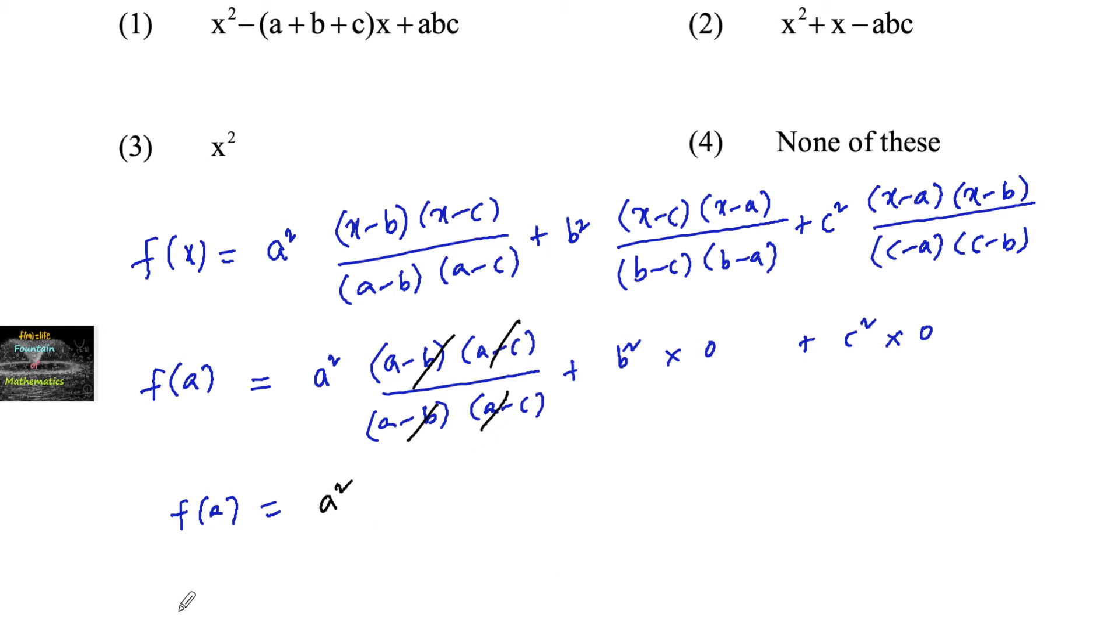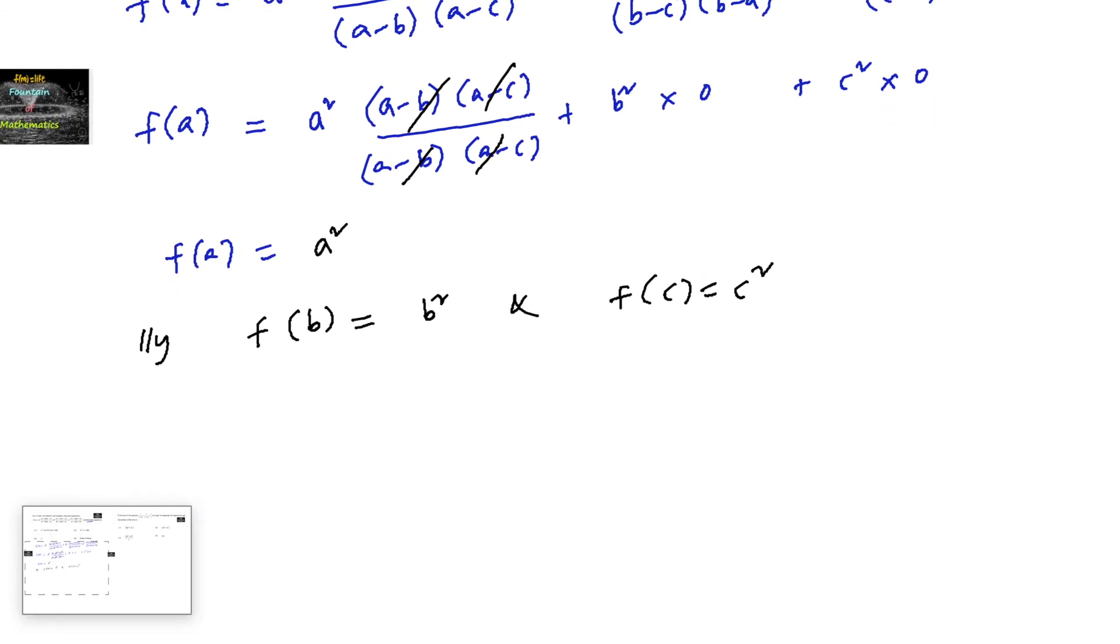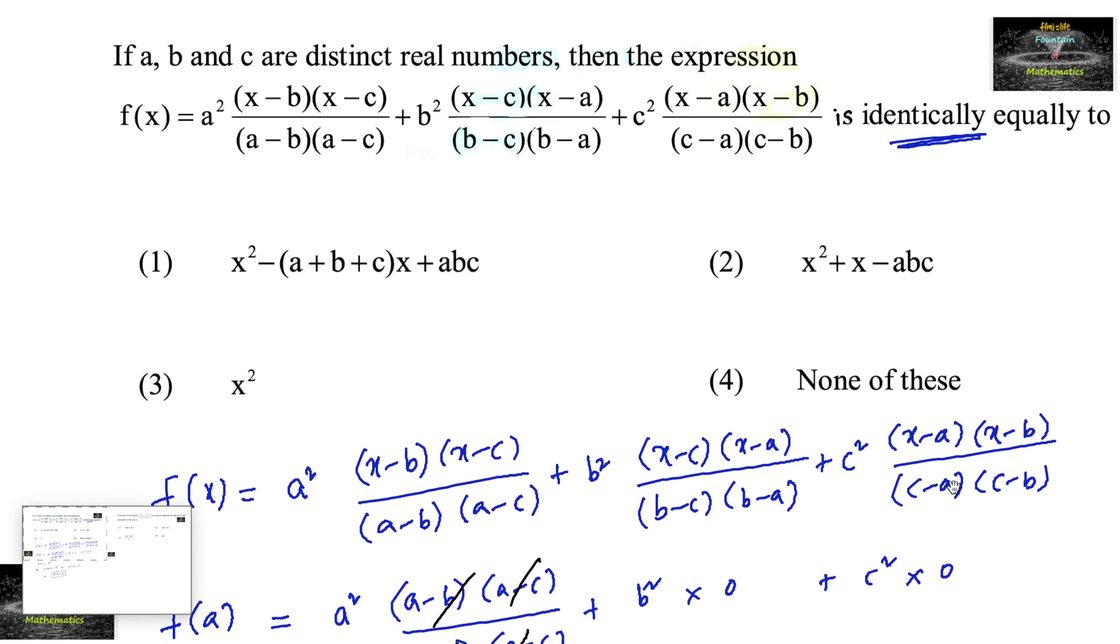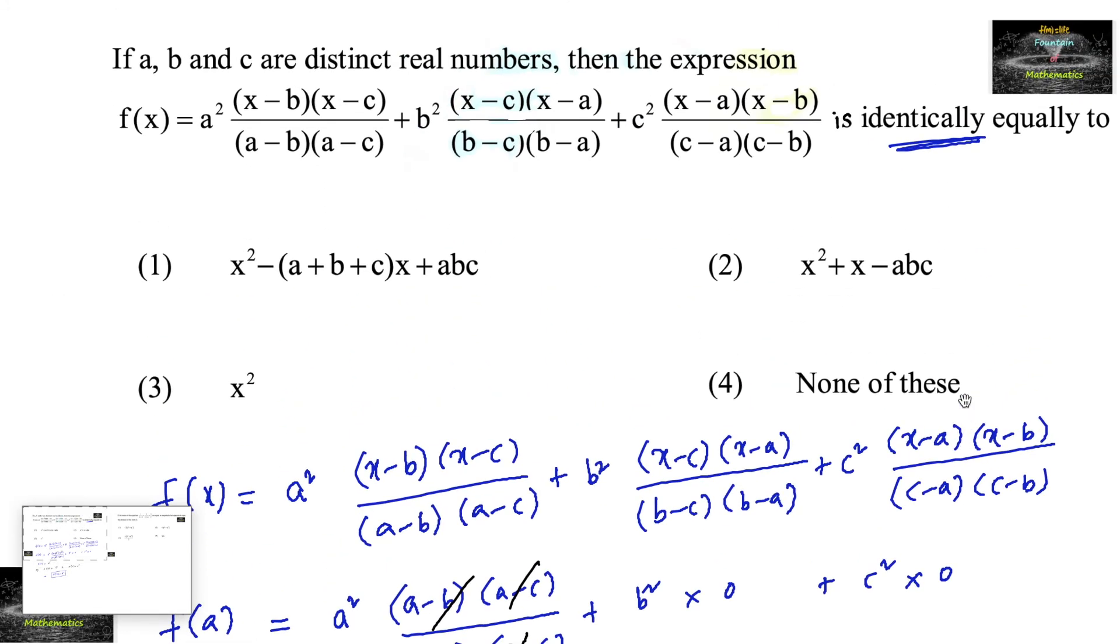Similarly by taking x equal to b, f of b equals b squared, and f of c equals c squared. From this we can conclude that f of x is identically equal to x squared. So we can go with option c.